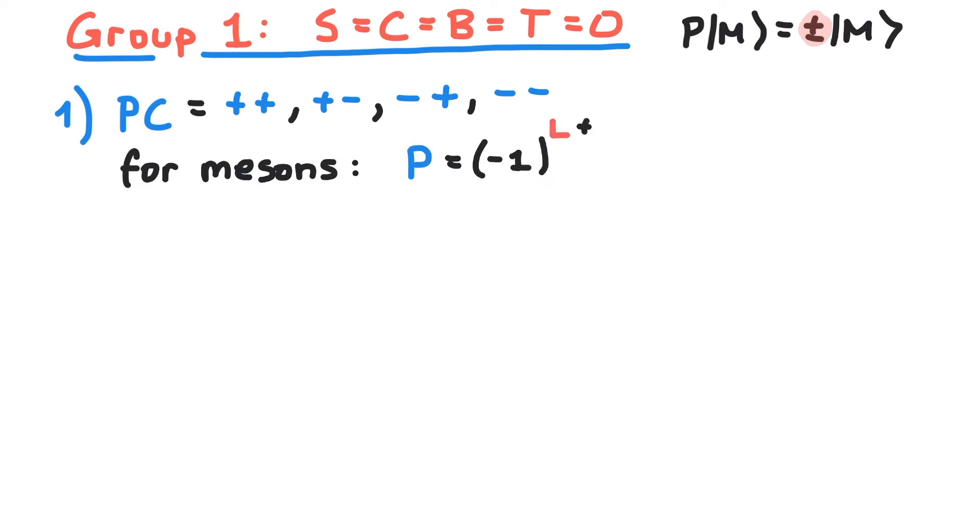P and C eigenvalues are related to spin and angular momentum. For mesons, these relations look like this. This enables us to find allowed values for the total angular momentum of mesons. If we assume the plus-plus case, then L has to be an odd number in order for P to be plus one. And if L is odd, S must be equal to one in order to have C equal to plus one.